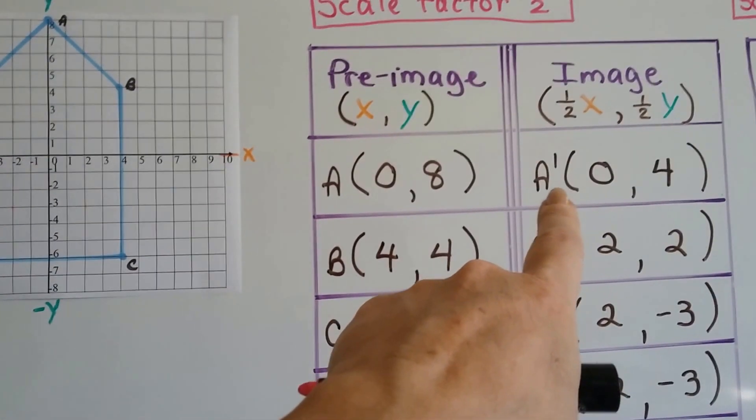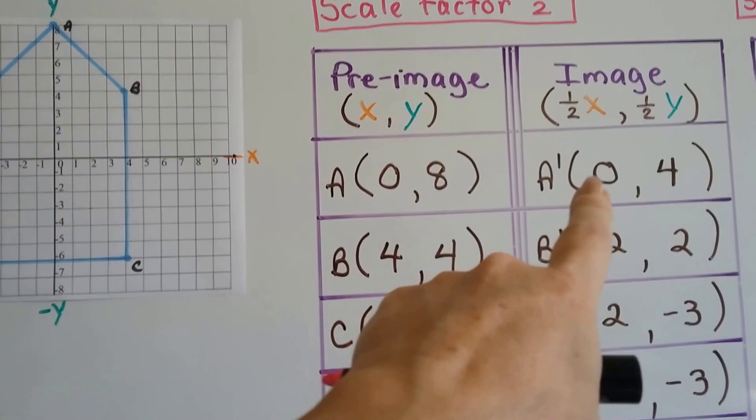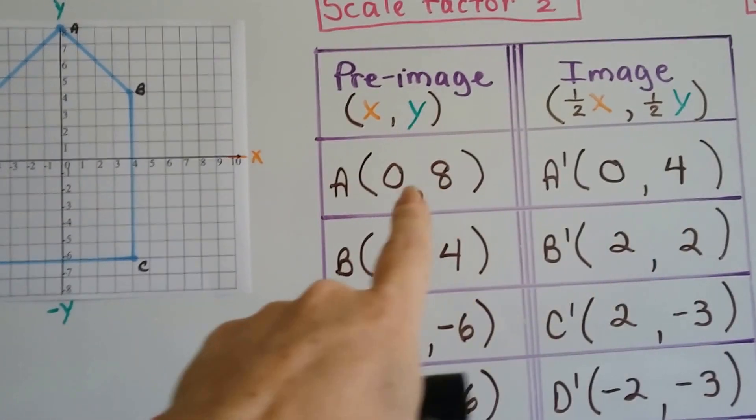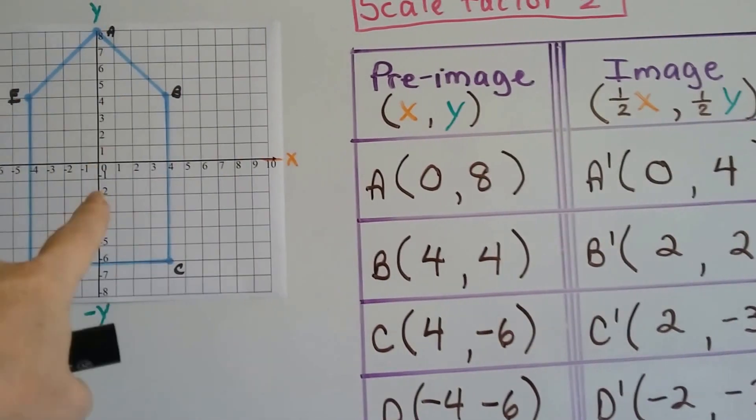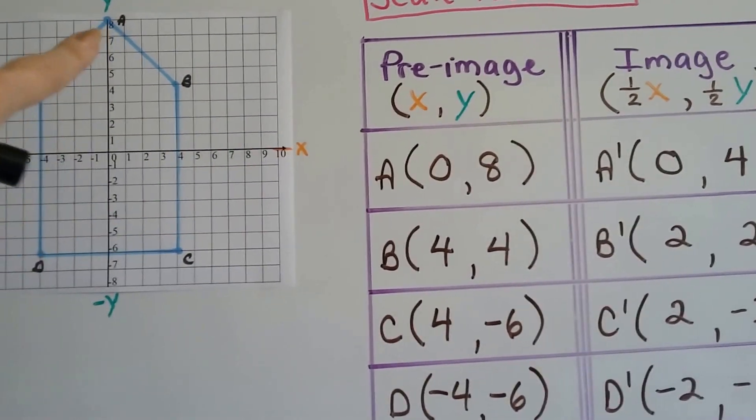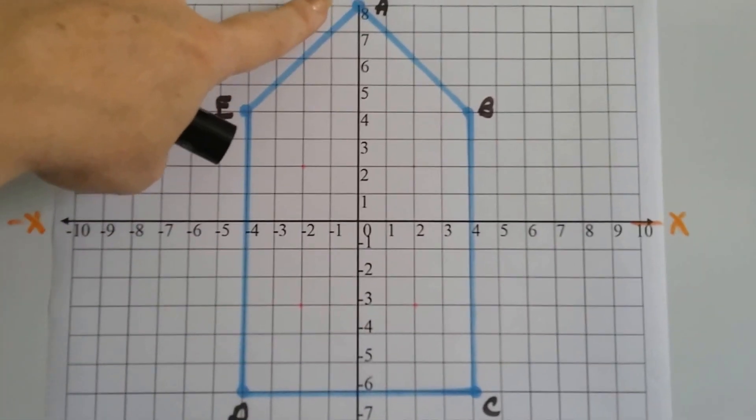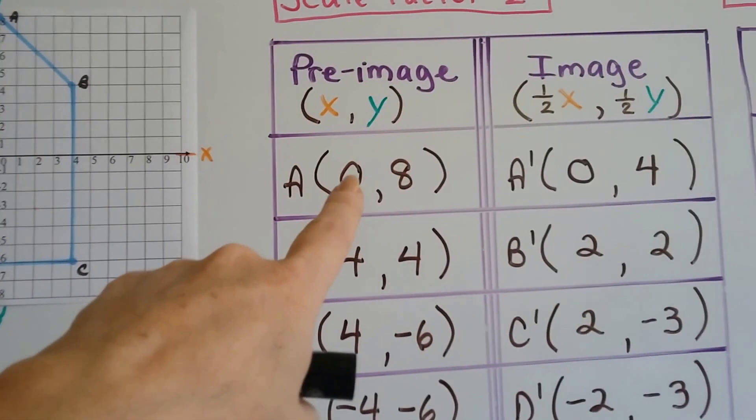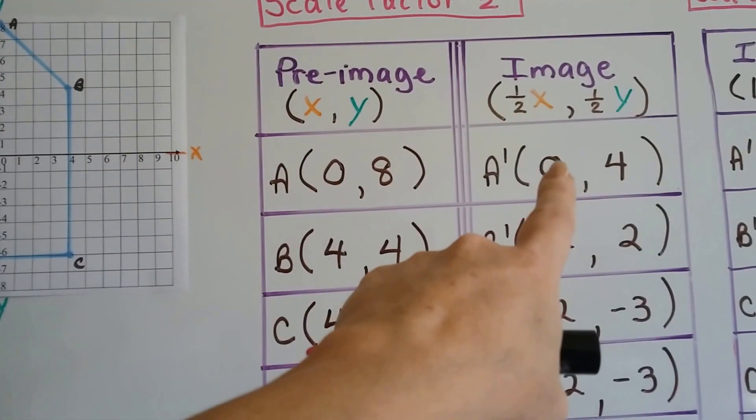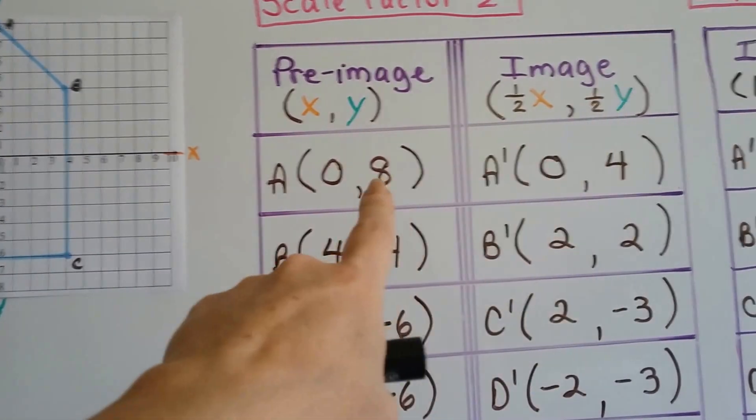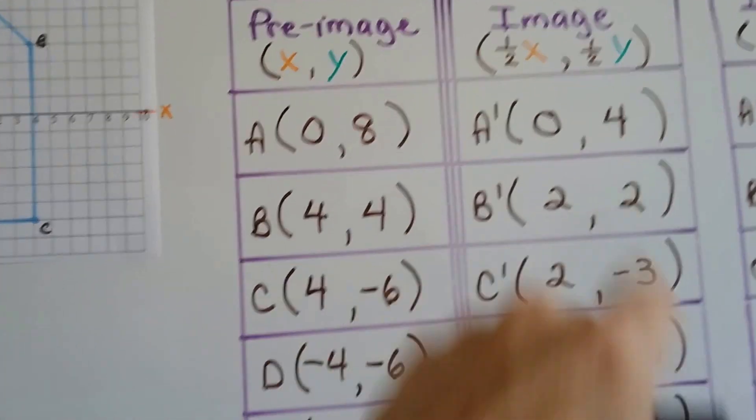So the image is going to have a prime at 0, 4. Because a was at 0, 8. See that? It was at 0, 8. So if we multiply 0 times a half, it's still going to be 0. And if we multiply 8 times a half, it's going to be 4.